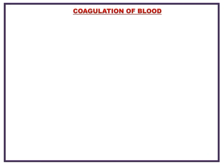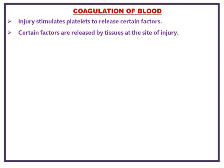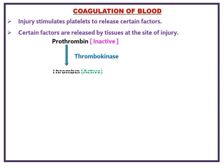Coagulation of blood, or clotting of blood: injury stimulates platelets to release certain factors, and certain factors are also released by tissues at the site of injury. Prothrombin is a protein present in the plasma in an inactive form. It is converted into thrombin, an active form, by the enzyme thrombokinase.